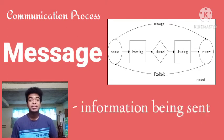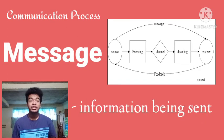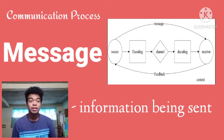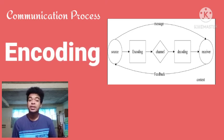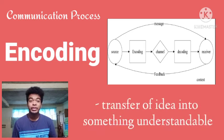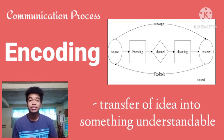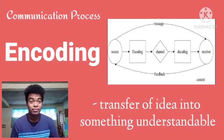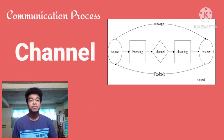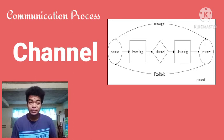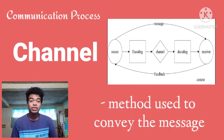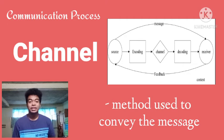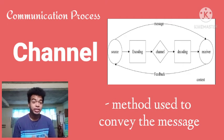The next element is the message — this is the information being sent by the source or sender to the recipient. Encoding is the process of transferring data or a message into something understandable to the listener or receiver. Next is channel — this is the method used to convey the message. Examples of a channel include written mail, email,